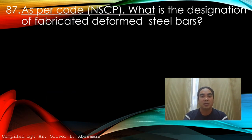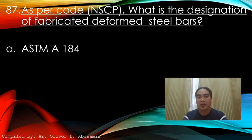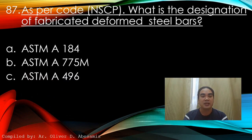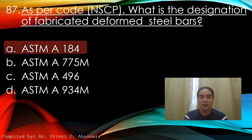Question 87: As per the NSCP code, what is the designation of fabricated deformed steel bars? A) ASTM A184, B) ASTM A775M, C) ASTM A496, D) ASTM A4934M. Answer: A) ASTM A184.